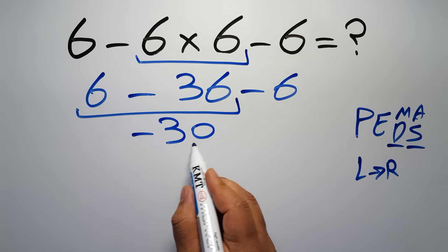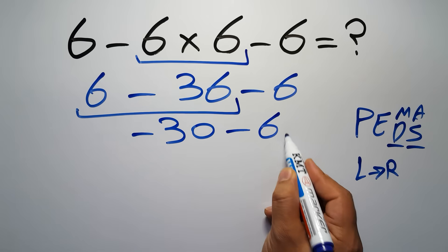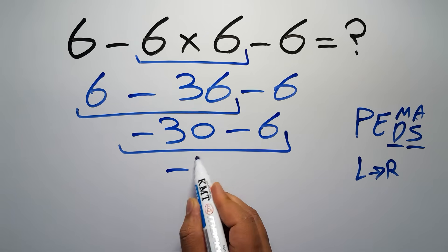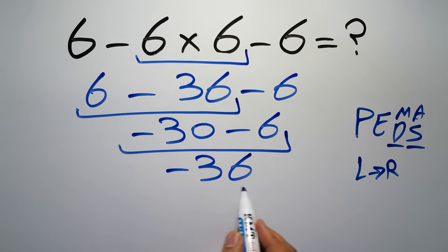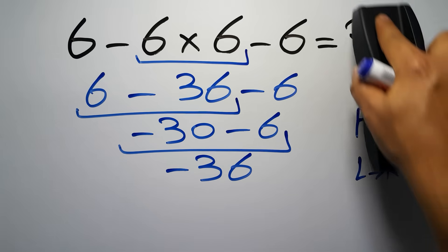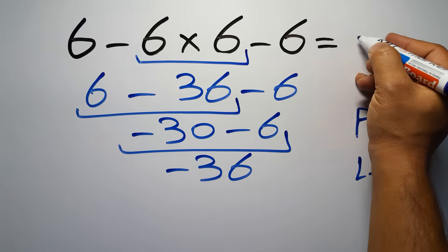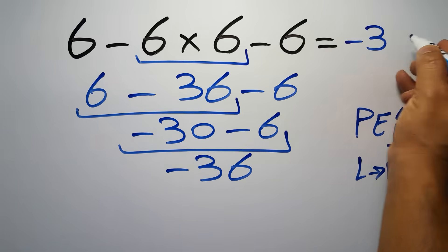So negative thirty minus six, which equals negative thirty-six. And this is our final answer to this problem. The correct answer is negative thirty-six.